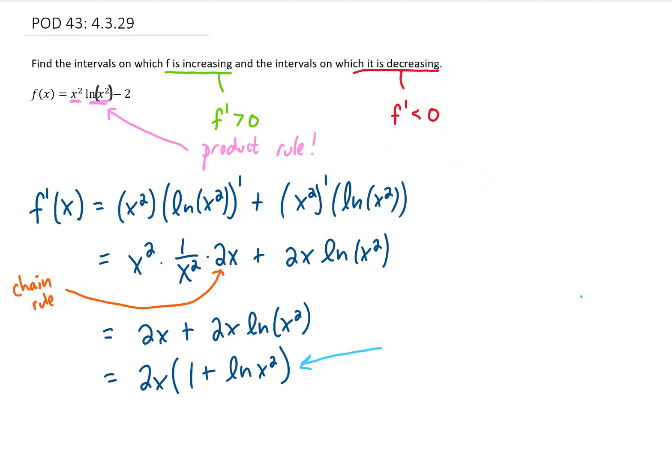We can start to answer that question by asking, where is this derivative zero and where is it undefined? In other words, we're finding the critical points of our function f(x). And first we can recall that a natural log function is undefined when its argument is zero. So our f'(x) is going to be undefined when x equals zero.